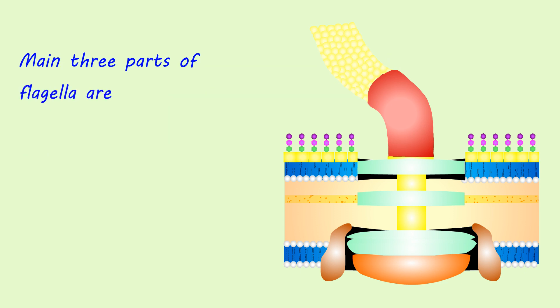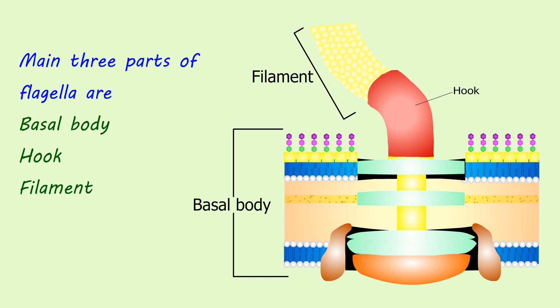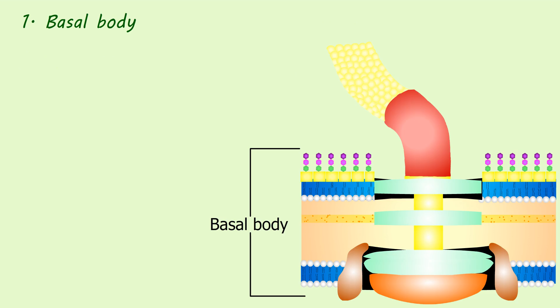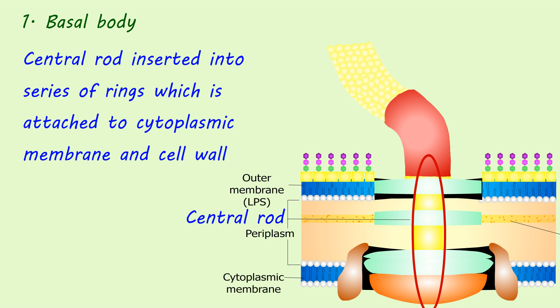Flagella has three parts: basal body, hook, and filament. The basal body is composed of a central rod inserted into a series of rings, which is attached to the cytoplasmic membrane and cell wall.